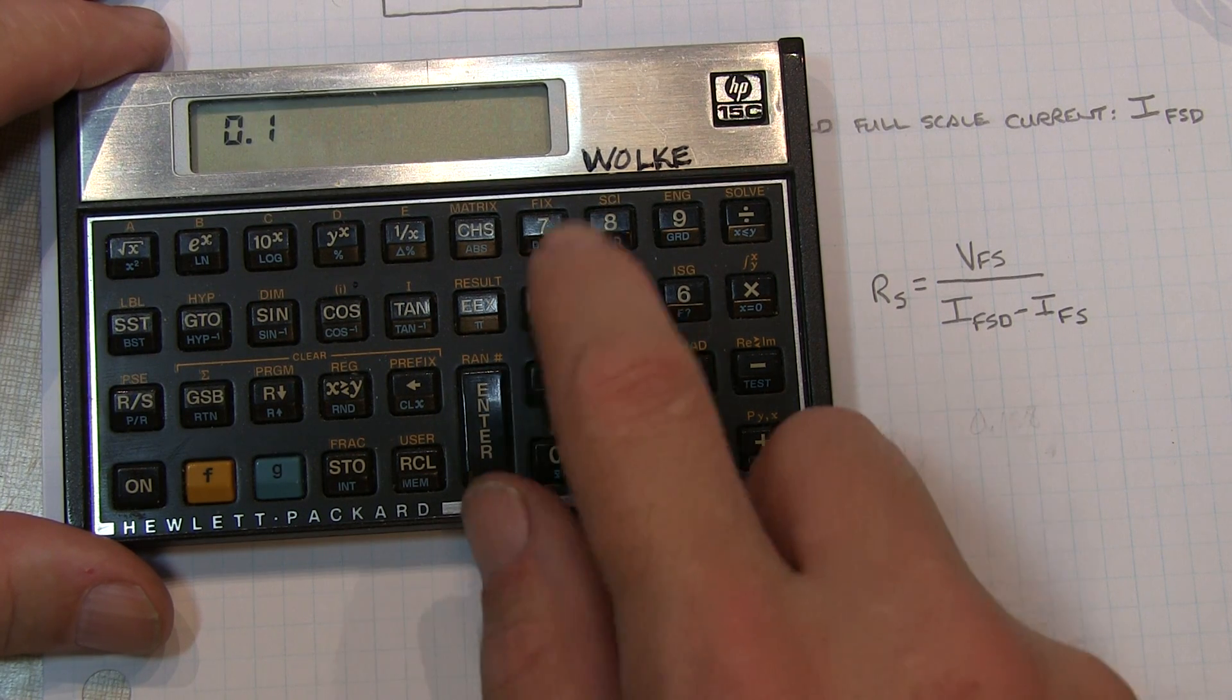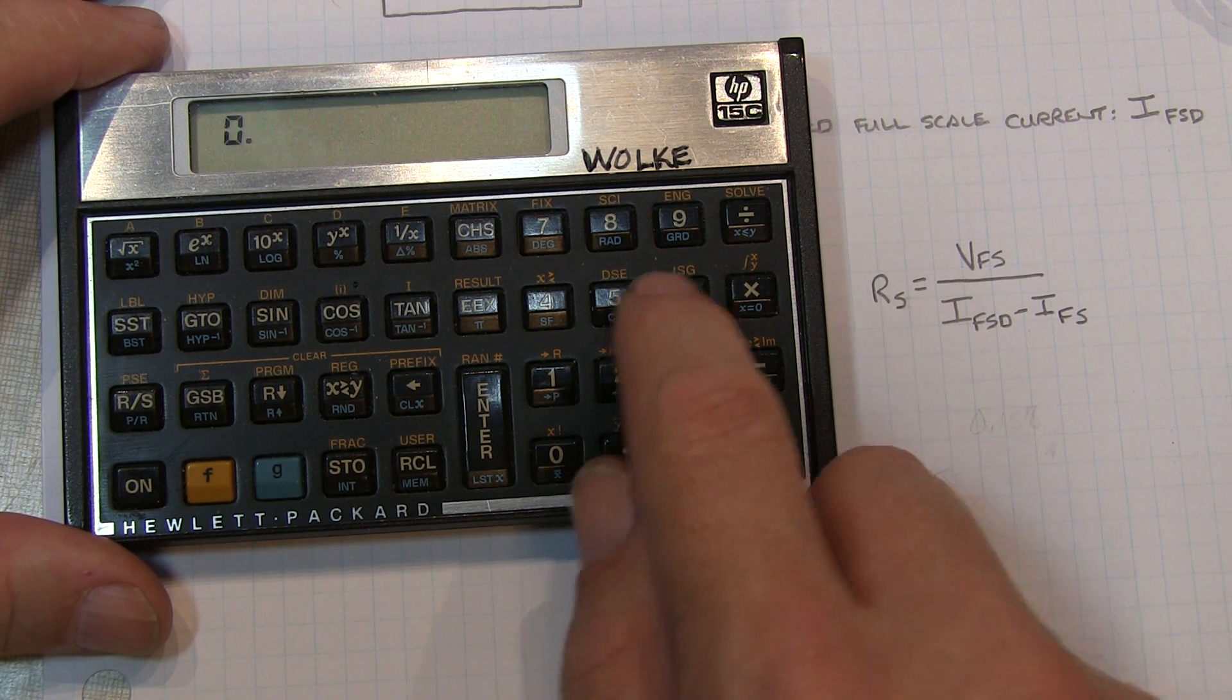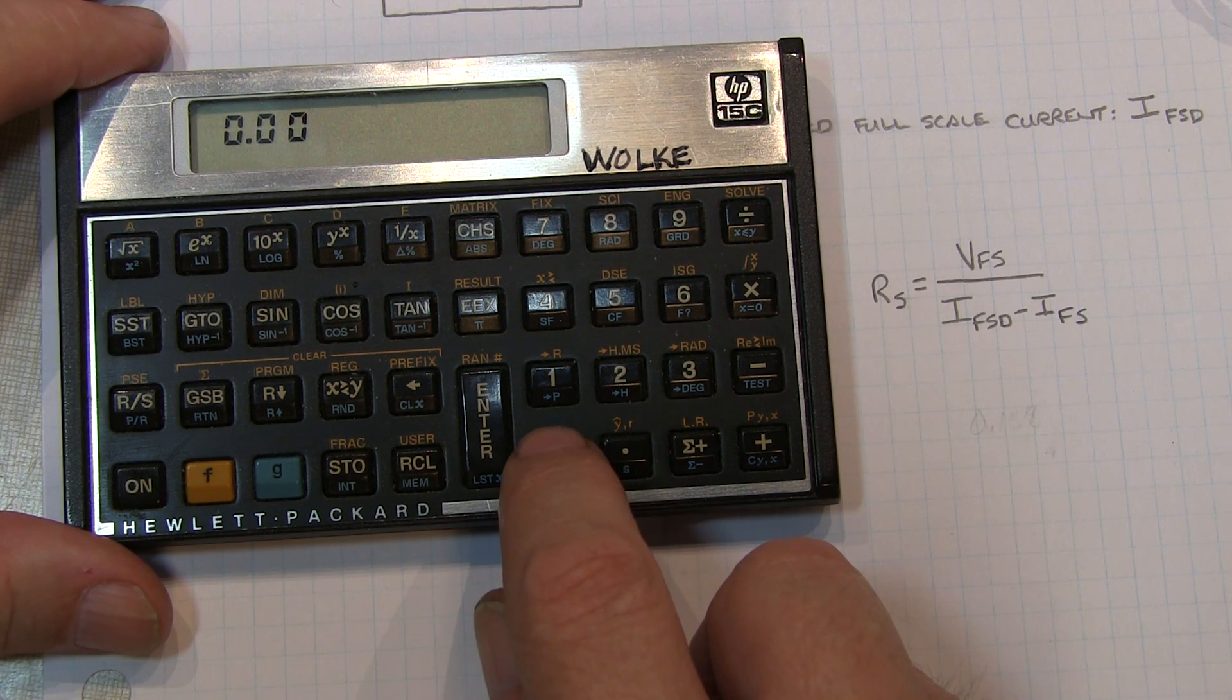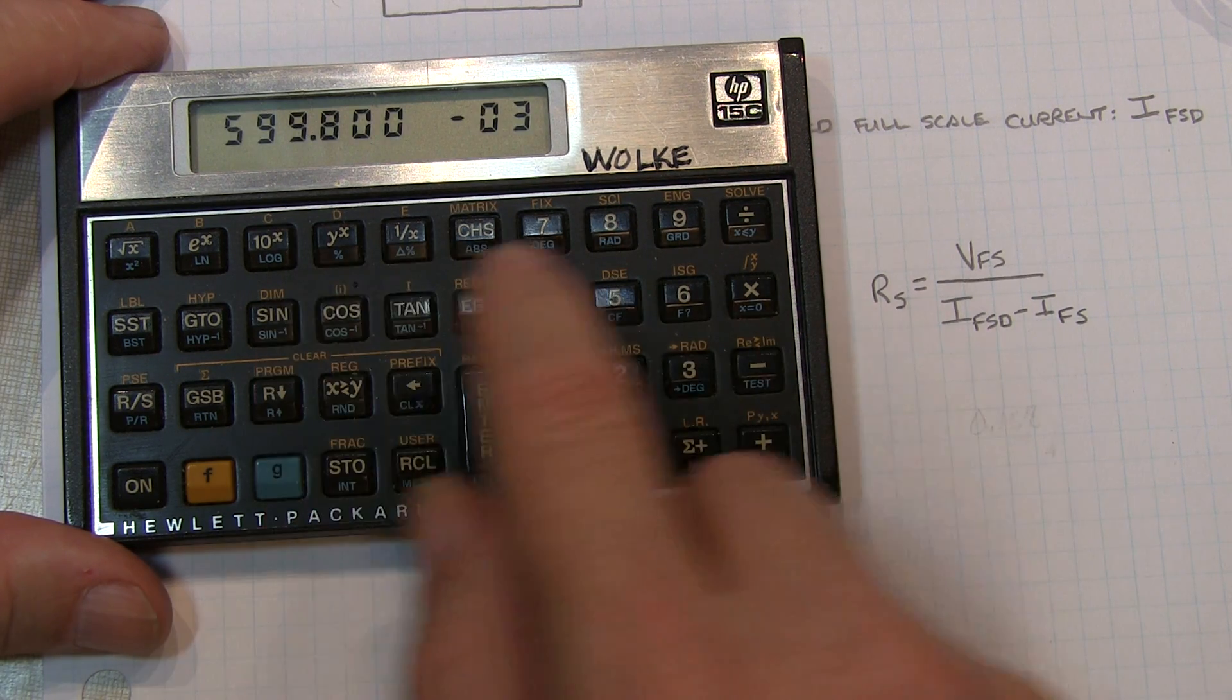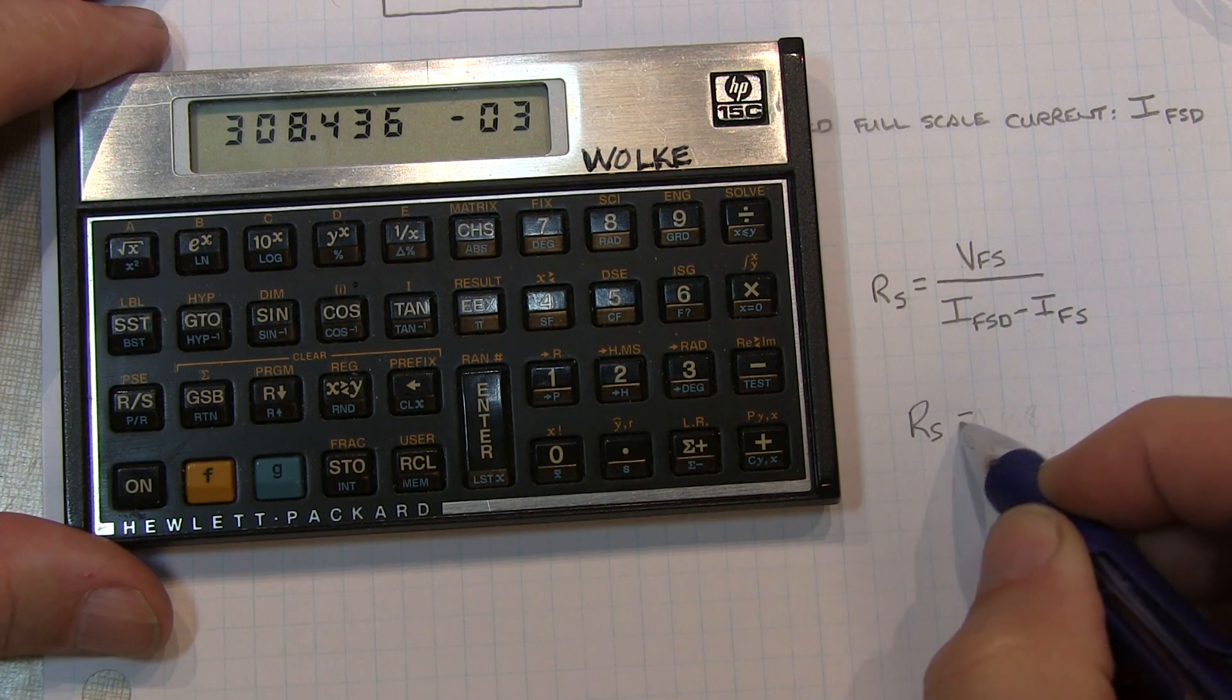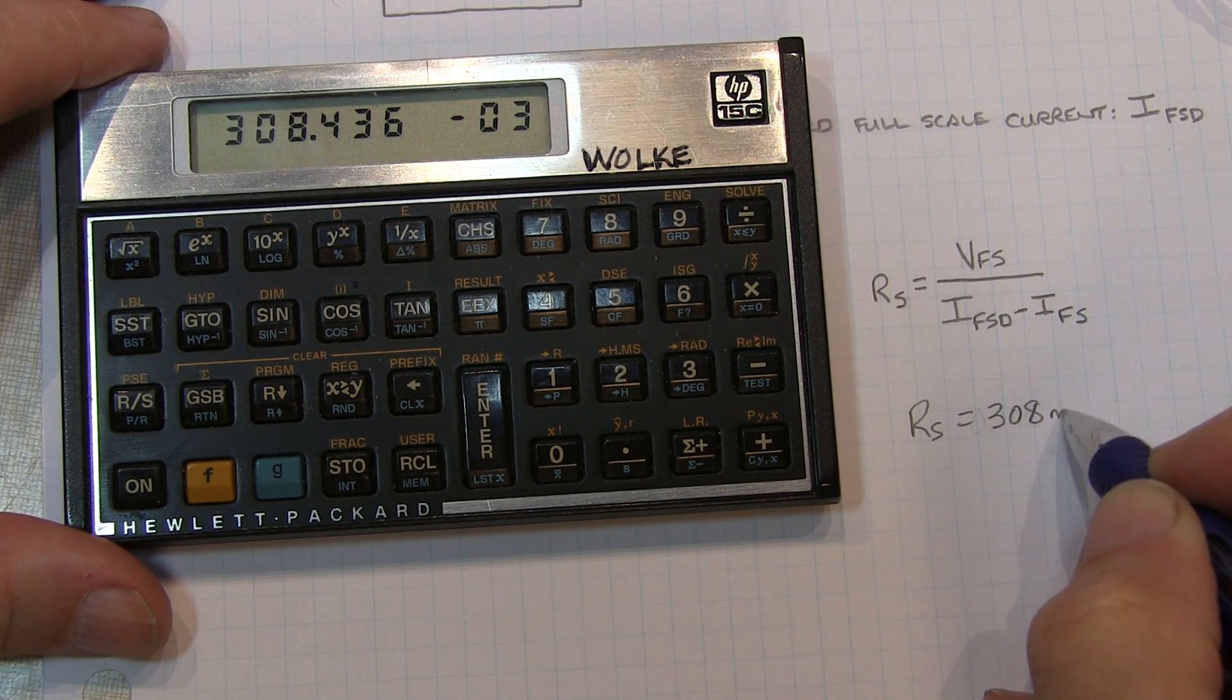So we've got 185 millivolts across the resistor. That's our full scale voltage across the meter movement. And then we can take 0.6 amps and subtract from that our 200 microamps, and we've got our shunt resistor is equal to just a little over 308 milliohms.